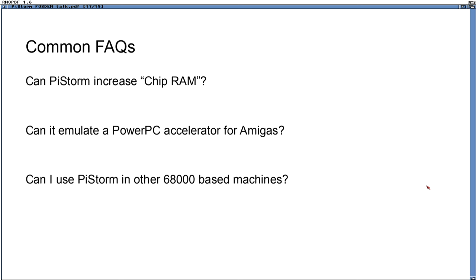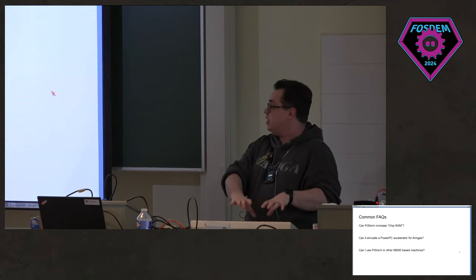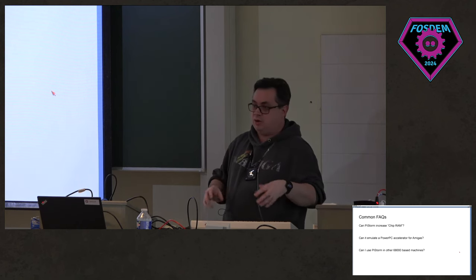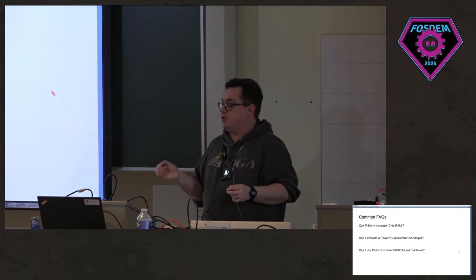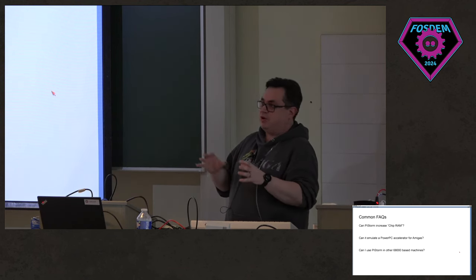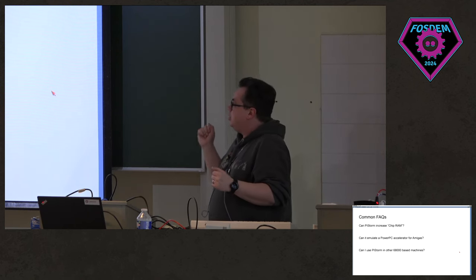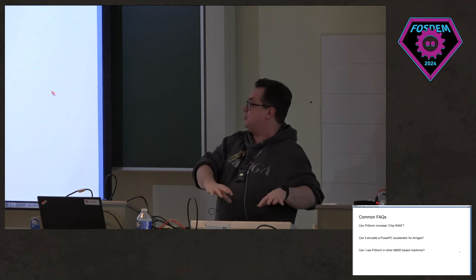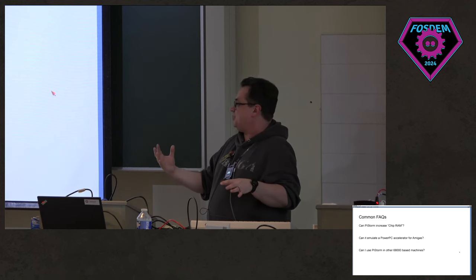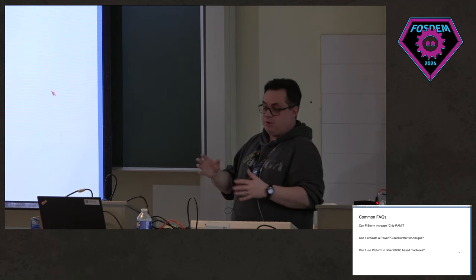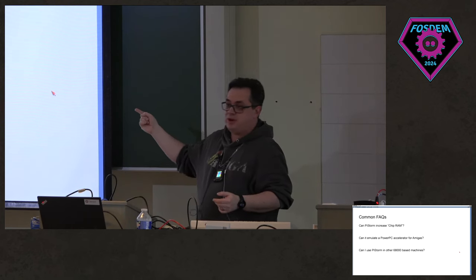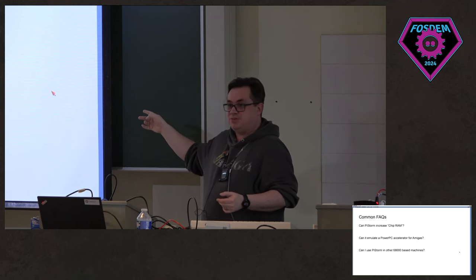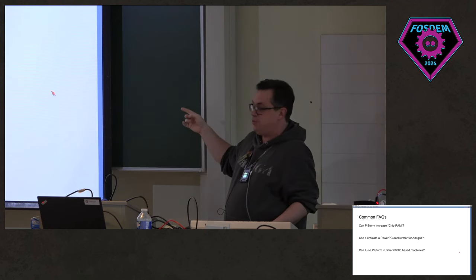Common FAQ: can PiStorm modify Chip RAM? Chip RAM is the RAM that the entire Amiga chipset shares — audio chip, graphics chip, etc. — and it is capped at 2 megabytes by design by Commodore. They were trying to move it to 8 MB for the Amiga 4000 but it never happened. No, PiStorm can't increase it because we don't modify or override the chipset. So whilst we have 2 gigabytes of fast RAM, we don't have any additional chip RAM. Can you emulate a PowerPC? Probably yes, but it's a lot of work and we don't want to do it, though if anyone wants to put a PPC emulator in there it will probably work.